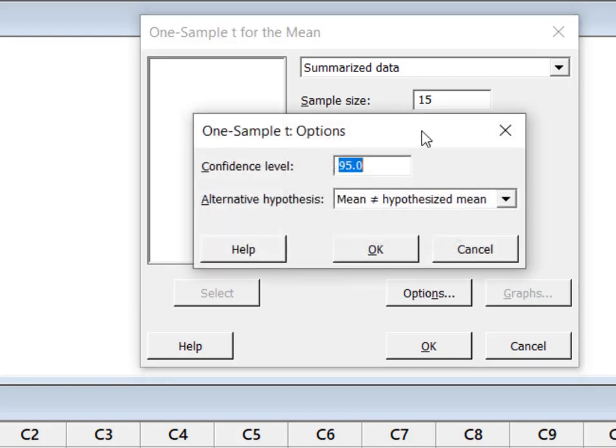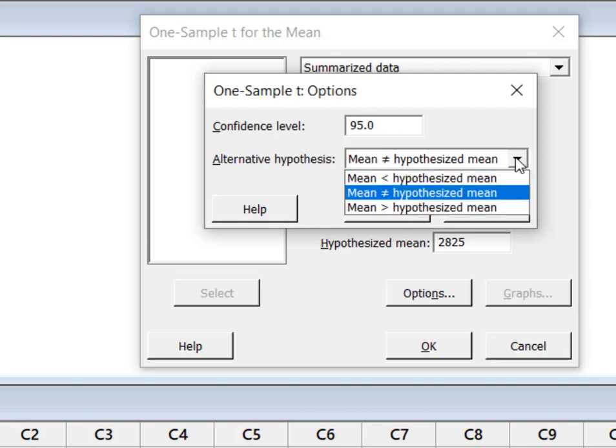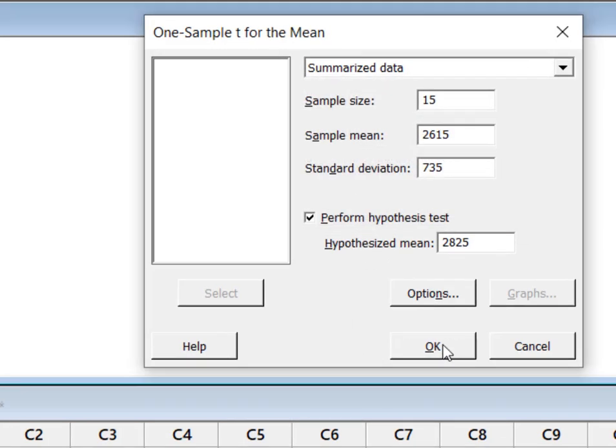Now in options I need to make sure I'm running at the right confidence level. 95 is correct. And for my alternative hypothesis, remember here we select the direction of our alternative, and that was not equal to. I'm going to hit OK twice.